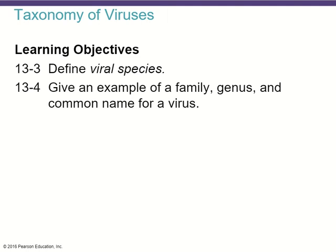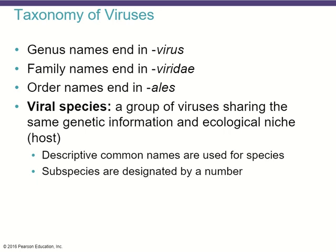As far as taxonomy — the way of organizing different types of viruses — it's a little more difficult since it's not based on a cell. Viruses will have a genus where the name ends in 'virus,' a family of viruses with a common name ending in 'viridae,' and at the order level the name will end in 'ales.' A viral species is a group of viruses sharing the same genetic information as well as ecological niche, essentially sharing the same type of host. There are descriptive common names used for species, but subspecies need to be distinguished by some number.